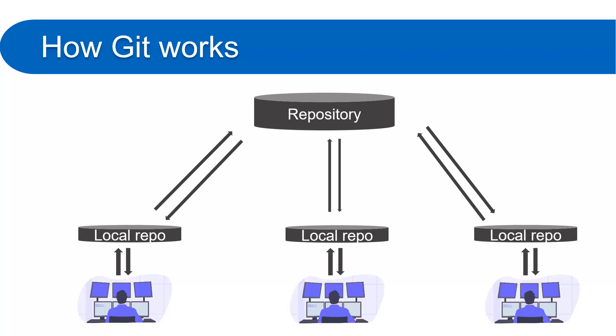Just like the first developer, additional developers also fetch the entire code from the main repository to their local repository, make changes, create multiple commits — 5 commits, 10 commits — and when they're ready, push the code from local to the server. This is the main difference: in centralized VCS, every commit automatically sends changes to the main repository, but in Git, all changes remain in your local repository until you choose to push them.